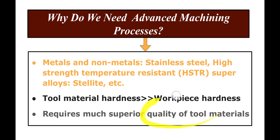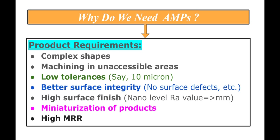Apart from work piece material properties, the product requirements are very complex in shape. Many times you require machining components in inaccessible areas for conventional machine tools — whether single-point or multi-point cutting tools — so you definitely require advanced machining processes. The tolerances required these days are very small, say 10 micrometers or even smaller, depending on the component requirement.